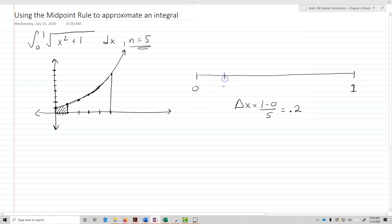So I'm going to have 0, then 0.2, 0.2, and then another 0.2, that's going to take me to 0.4, another 0.2, that's 0.6, another 0.2, that's 0.8. So that's what my delta x is going to be. My delta x is going to be 0.2.